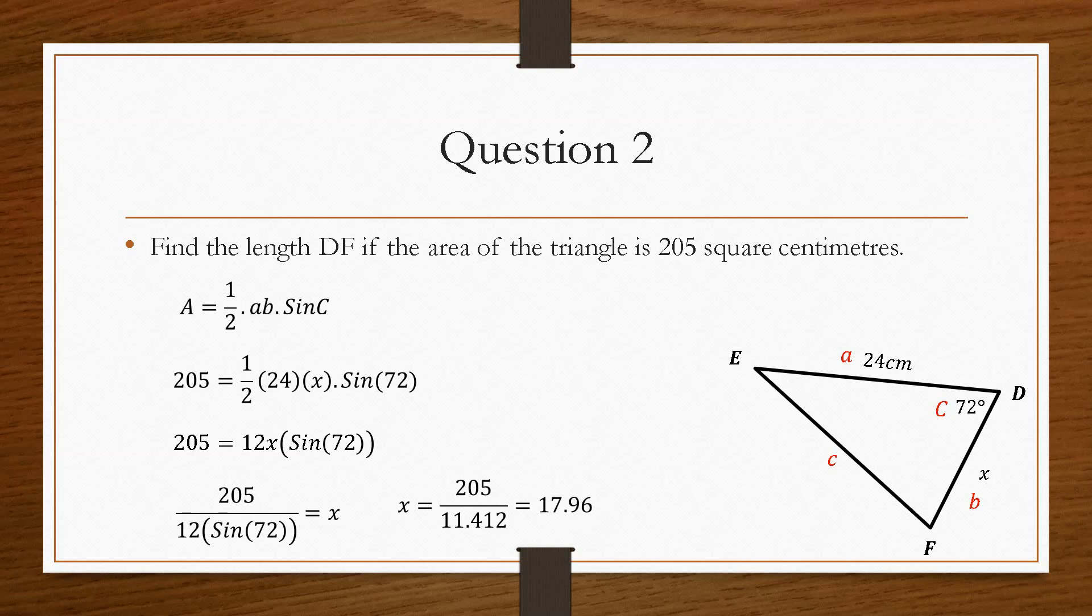I'm just going to rewrite this the other way, having worked out what sine 72 times 12 is, which gives us 11.412. Then if we do 205 divided by that, it gives us 17.96, and we'll round this to 18 centimetres because all our other units are to the nearest whole number. So the length of DF is 18 centimetres.